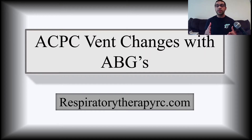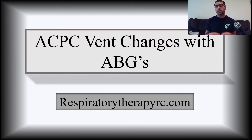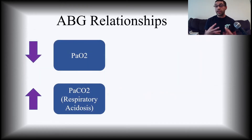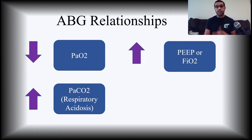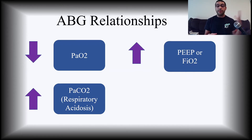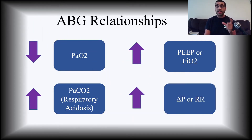This video is about ACPC ventilator changes made based on ABGs. This time we're going to focus on the pressure control aspect in regards to vent changes. Don't forget your ABG relationships: if you have a low PaO2, you have two options — you can increase the PEEP or the FiO2, whichever is best for the patient. If you have a high PaCO2 — a hypercapnic patient exhibiting respiratory acidosis — you also have two options: you can increase the Delta P or the respiratory rate.